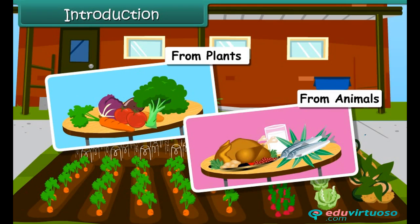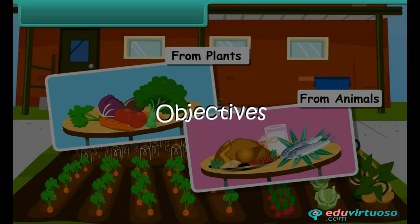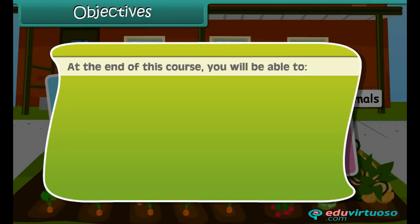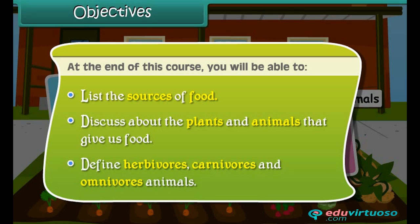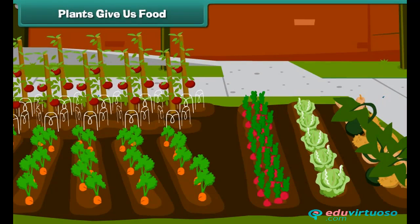We get food from plants and animals. At the end of this course, you'll be able to list the sources of food, discuss about the plants and animals that give us food, and define herbivorous, carnivorous, and omnivorous animals. As we know, plants are an important source of food — they give us fruits,